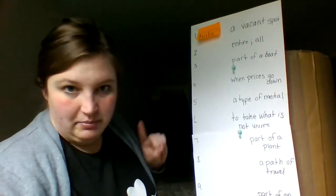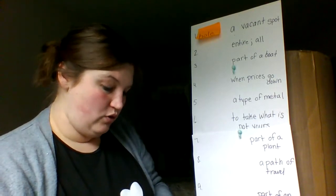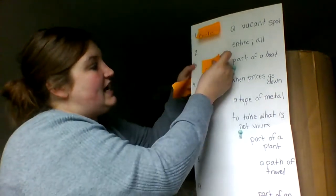We're going to skip. We're only going to do the odd numbers first. Number three says, a part of a boat. Part of a boat would be a sail, S-A-I-L.